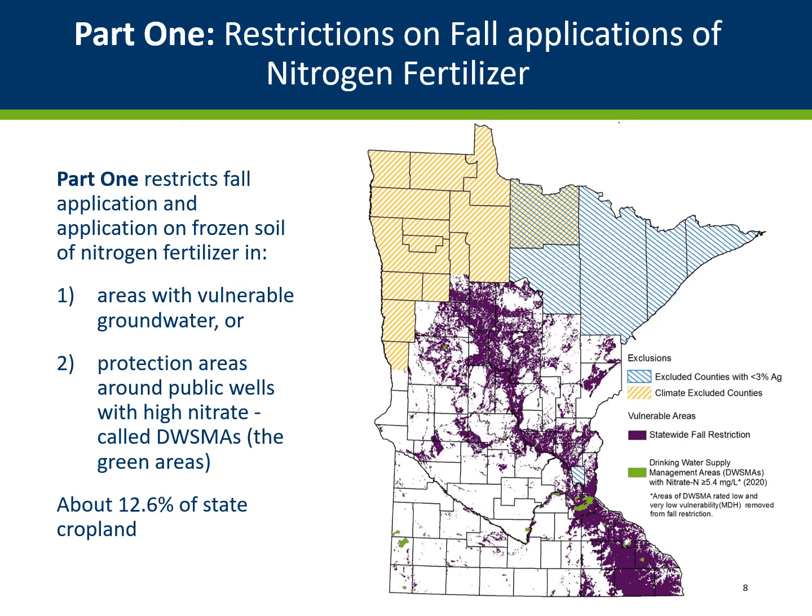In this map, the vulnerable groundwater areas are shown in purple, and the drinking water supply management areas are in green, although they are hard to see at this scale. About 12.6% of Minnesota's cropland is vulnerable.